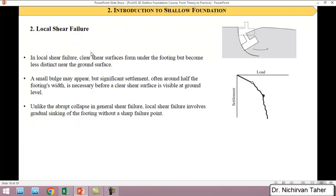The second shear failure of the soil is called local shear failure. In this type of shear failure, clear shear surfaces form under the footing but become less distinct near the ground surface. As we can see in here, unlike the general shear failure, a small amount of soil or bulge happens near the footing.